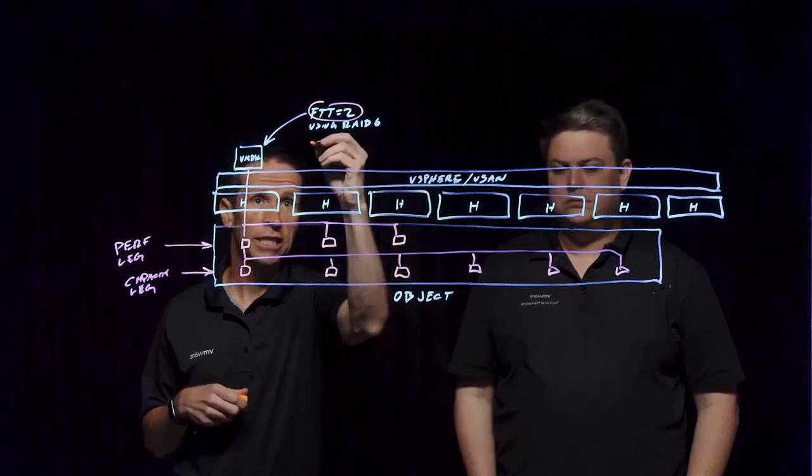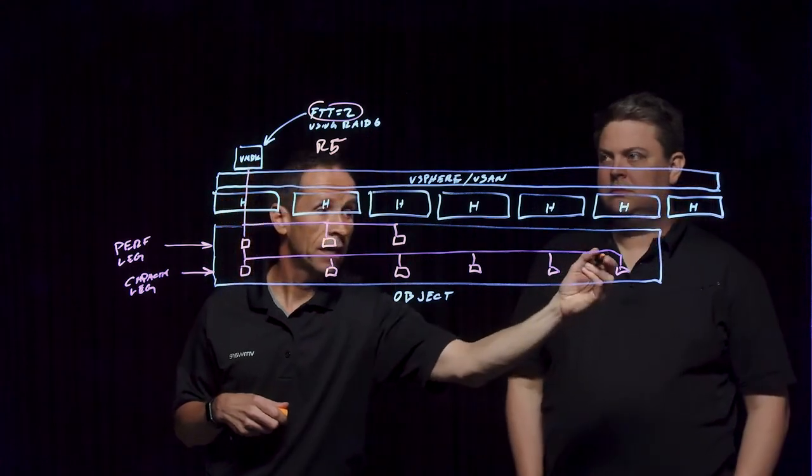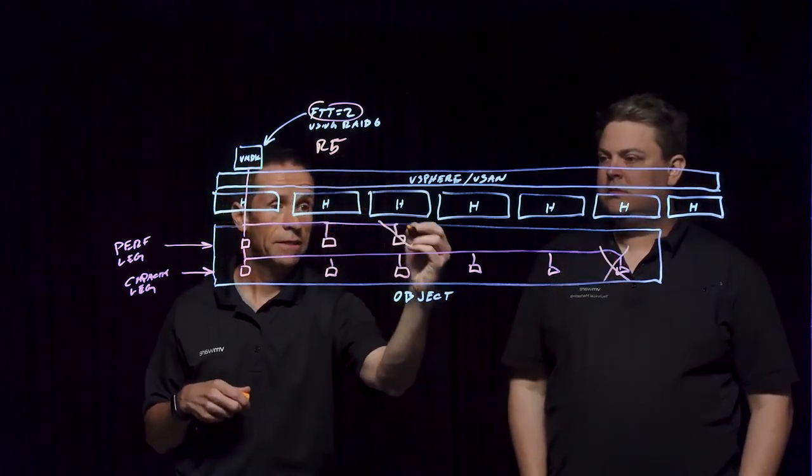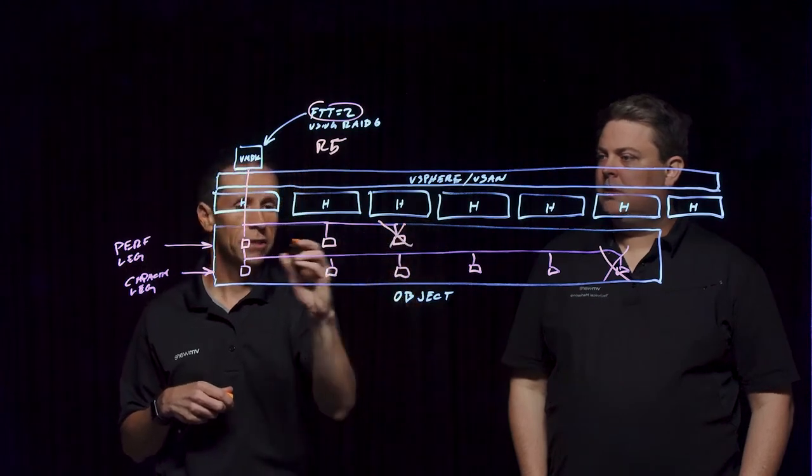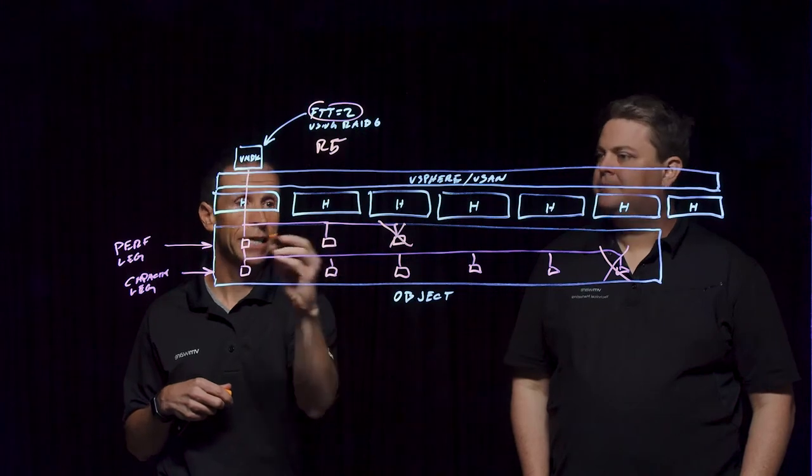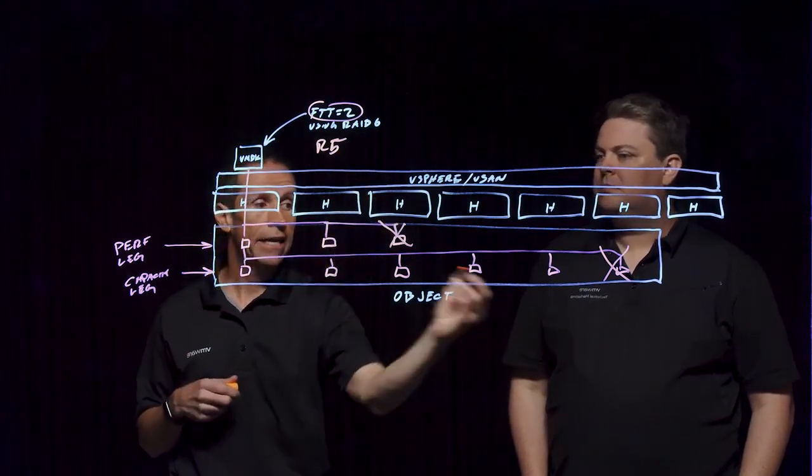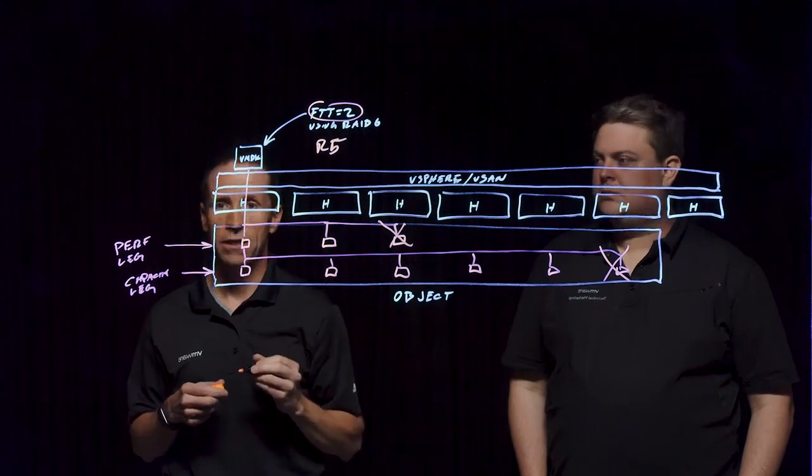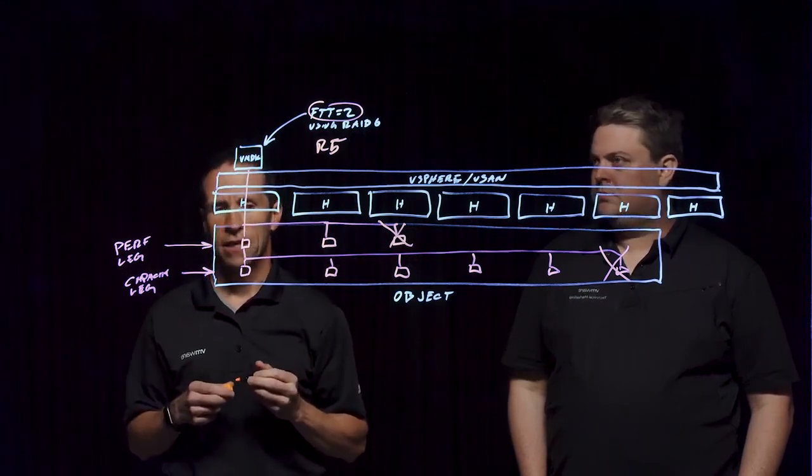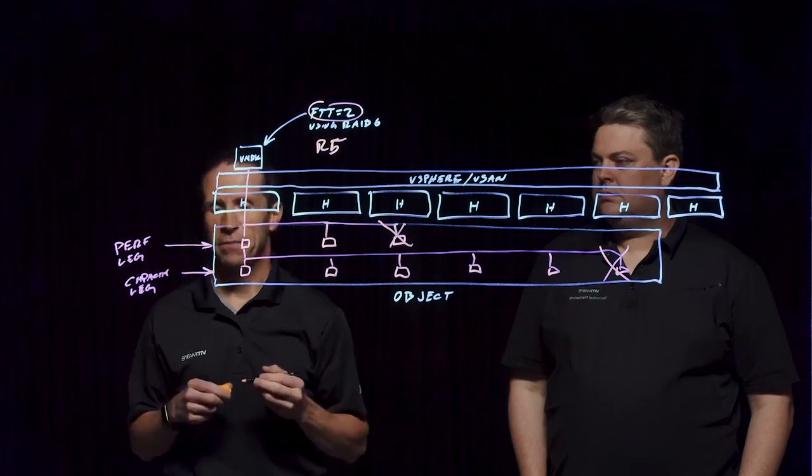If this storage policy was changed over to RAID 5 using a 4 plus 1 data scheme, this is where one of those components on the performance leg would be eliminated, because this is simply a two-way mirror, because it's a level of failure to tolerate of one, and now we're using a 4 plus 1 data placement arrangement. So a lot of flexibility in all of this, and we really think many of our customers are going to realize this benefit as well.